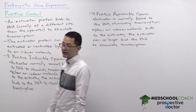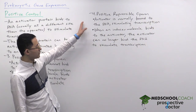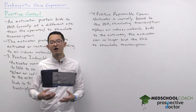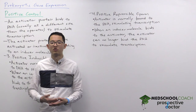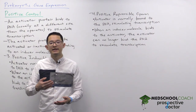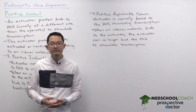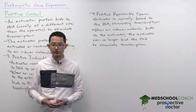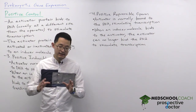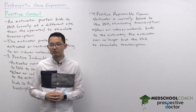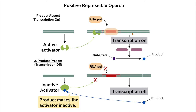Now let's take a look at positive repressible operons. These are operons where transcription is normally active and can be prevented or inhibited by the presence of inducer molecules. Let's take a look at this diagram. Under normal conditions, the activator protein by itself is able to bind to DNA, which stimulates the production of mRNA molecules.